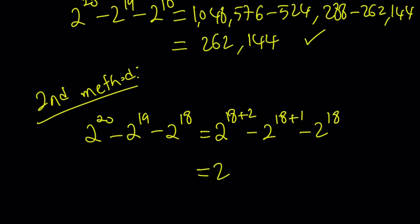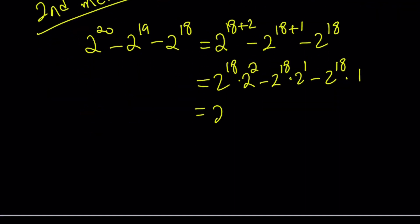Now we can go ahead and break this down. 2 to the 18 times 2 to the second. 2 to the 18 times 2 to the first minus 2 to the 18 times 1. Now 2 to the power 18, you can see clearly that it's the greatest common factor. So I can take it out. And inside the parentheses, we have everything left, whatever is left. We got 2 squared minus 2 to the first minus 1. And that is equal to 2 to the power 18 times 4 minus 2 minus 1.